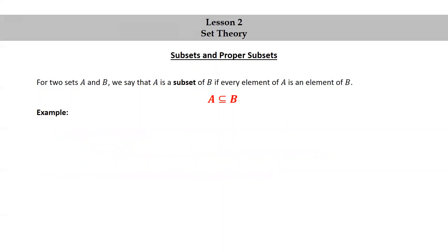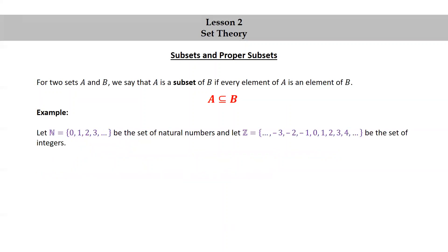Another example. Let N be the set {0, 1, 2, 3, ...}, the set of natural numbers, and Z the set {..., -3, -2, -1, 0, 1, 2, 3, 4, ...}, the set of integers. Since every natural number is an integer, N is a subset of Z.